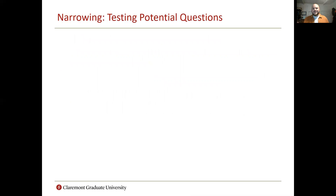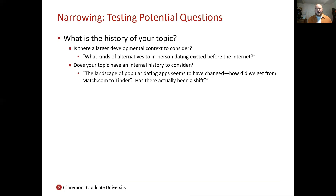After you've planned — or kind of at the same time that you're planning — you're also going to start testing potential research questions as you narrow down your topic. Here are some considerations and questions you can ask to narrow your search. First, does your topic have a history? Is there a larger developmental context to consider? Using the example of online dating as a broad general topic: if there's a developmental context to consider, here's a question — what kinds of alternatives to in-person dating existed before the internet?